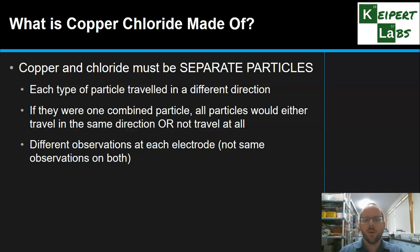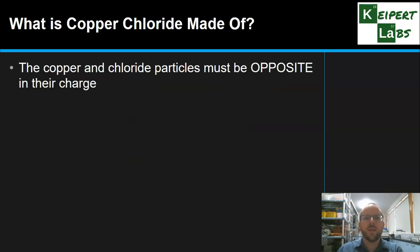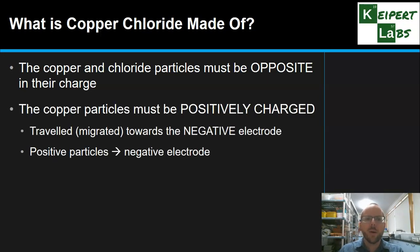So, copper and chloride are made of charged particles. Copper and chloride must be separate particles. So, now we can see that the copper and chloride particles must be opposite in their charge. That is, they mustn't be the same charge. But actually, one must be positively charged and one must be negatively charged. But so, which is which? Well, the copper particles must be positively charged. The reason we know this is that the copper deposit appeared on the negatively charged electrode. So, for the copper particles to have moved towards that side, they must be positive. Unless they wouldn't have moved to the negative electrode if that were not the case. So, copper particles are charged but positive.